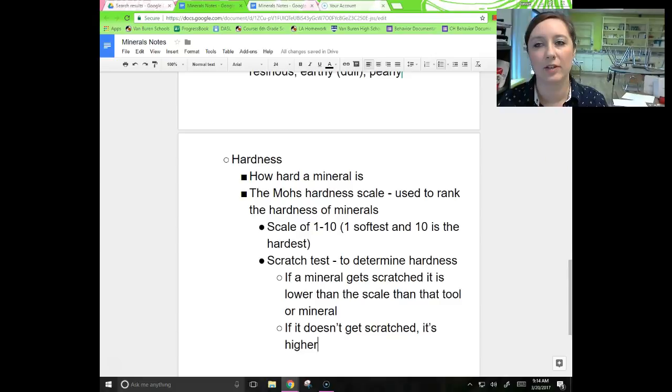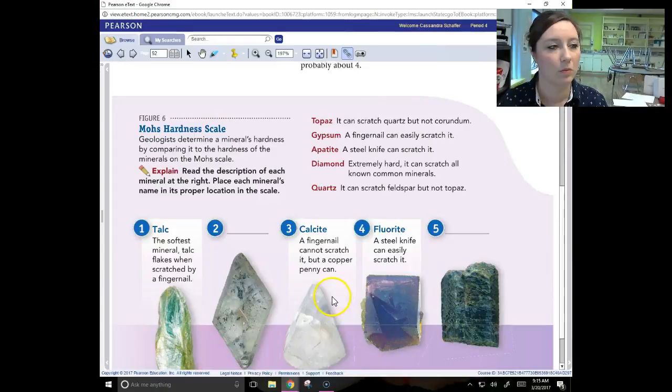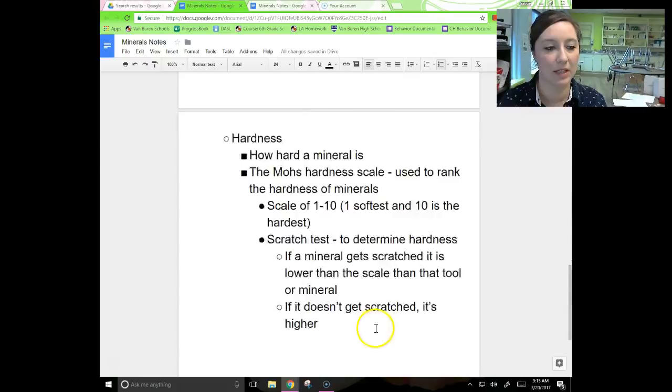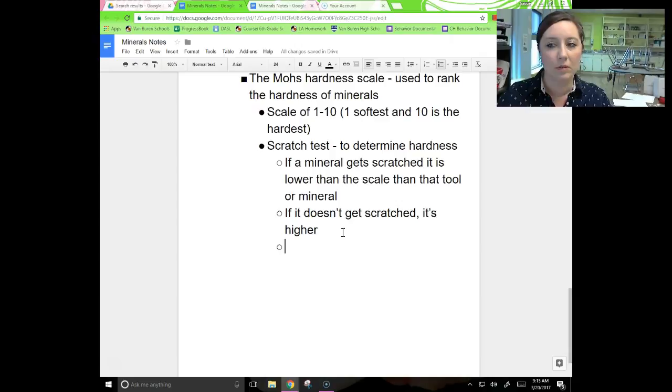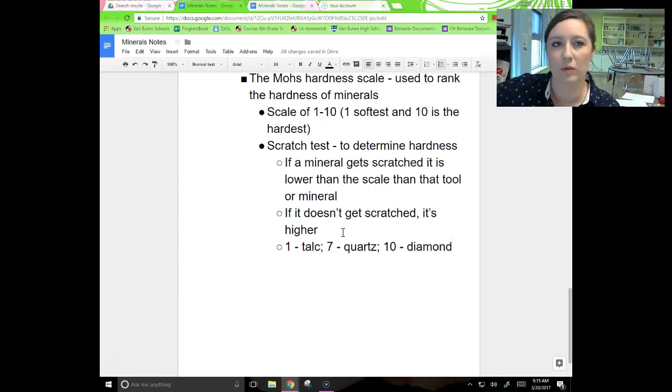Looking at all of the minerals that fit in here, 1 talc is the softest, the hardest is diamond. You don't have to memorize the whole Mohs hardness scale, but it is important to know some of the main ones. One is talc, seven is quartz, the hardest of the most common minerals we usually work with, and then the hardest is diamond. The majority of minerals we come across will have a hardness that's less than seven.